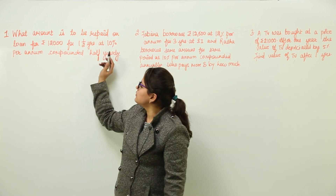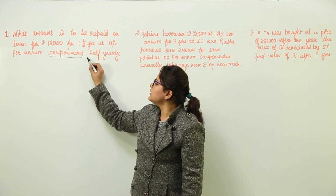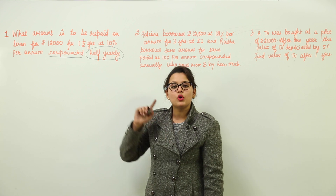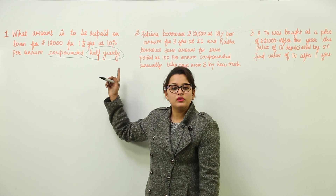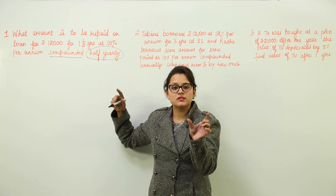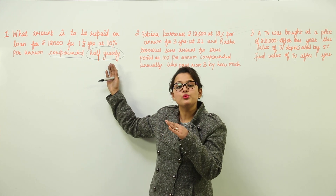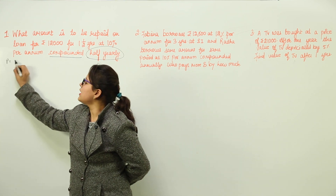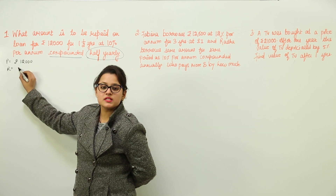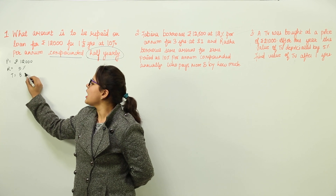Please take note: the interest is calculated as compound interest, and particularly on a half yearly basis. The rate of interest given is per annum, i.e., for 12 months. Since we are calculating on a half yearly basis, the rate reduces to half. So the principal is Rs. 12,000, the rate for half yearly purposes is 5%, and the time period is 3 half years.